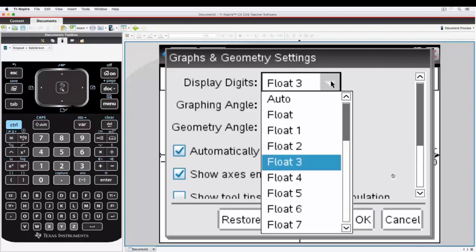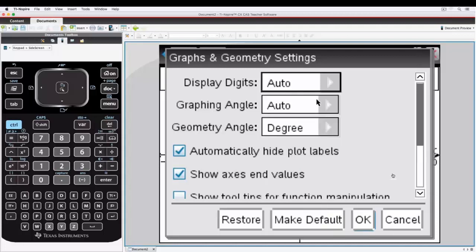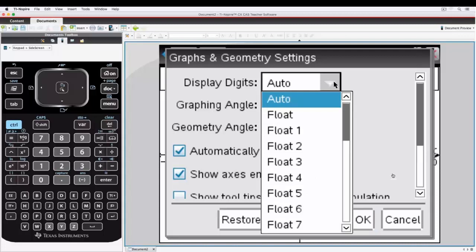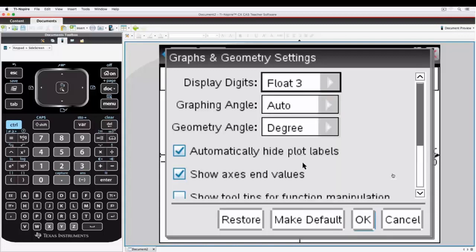The default for that is Float 3, and that's because the extra figures do block up part of the graph screen. Auto means it inherits the system settings, but you can have it set specifically for just within the graph page, so be careful of that.